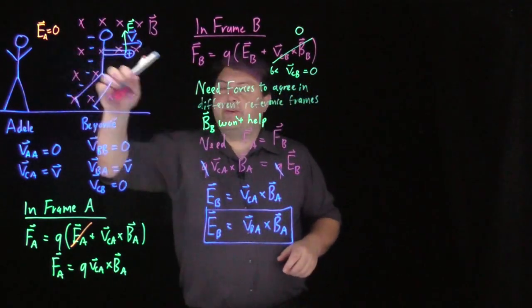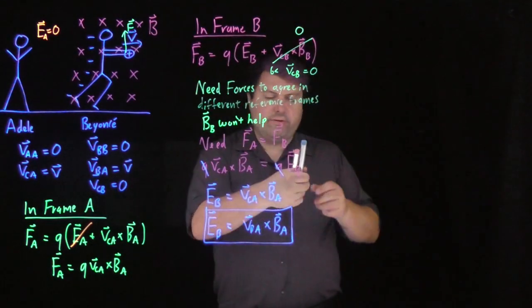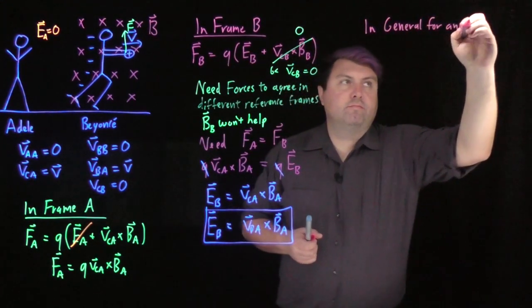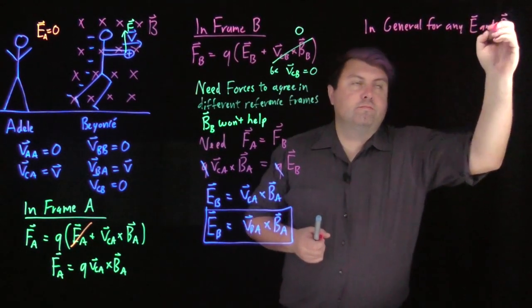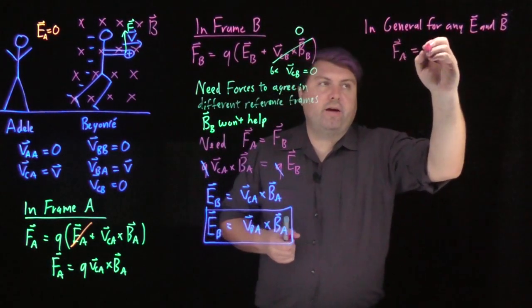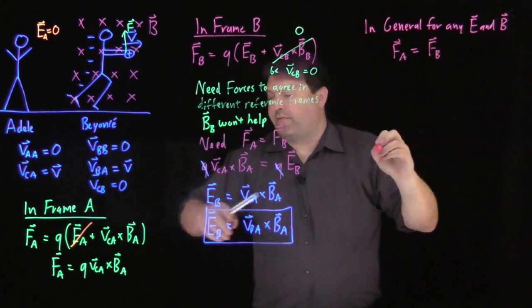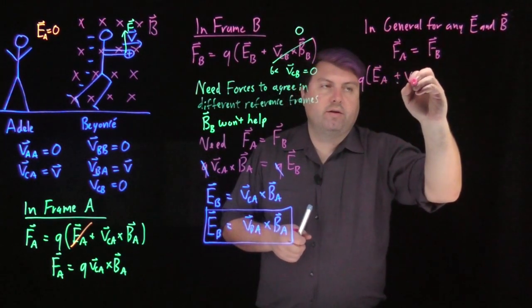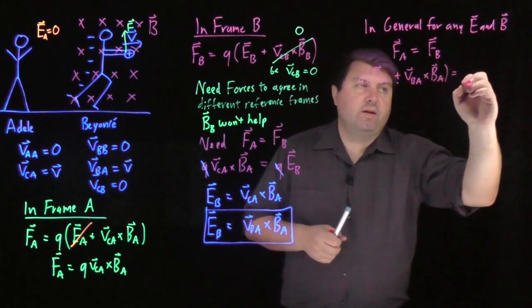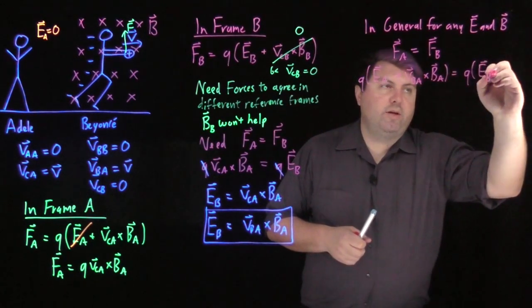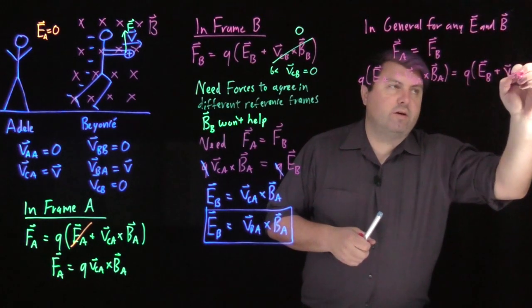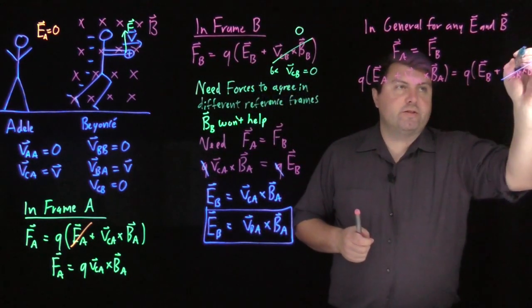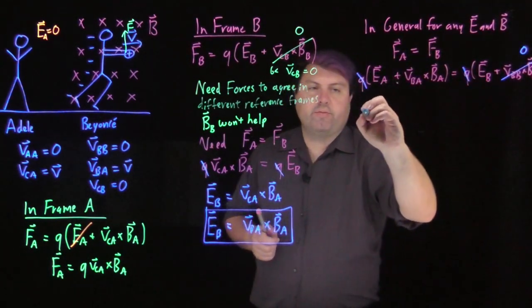If we have an electric field as well, if E A is not equal to zero, we can still use this F A equals F B. We have the force in frame A equals the force in frame B. We need to have in frame A, Q E A plus VB. So we can cancel out the Qs. And so we get in general VBA crossed with BA equals Q E B plus VBB crossed BB. Now, any velocity relative to itself is going to be zero. So this is zero. We can cancel out the Qs. And so we get in general.